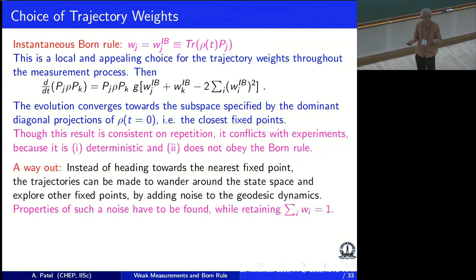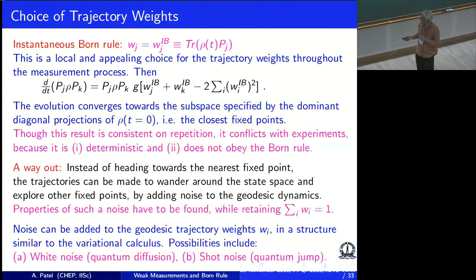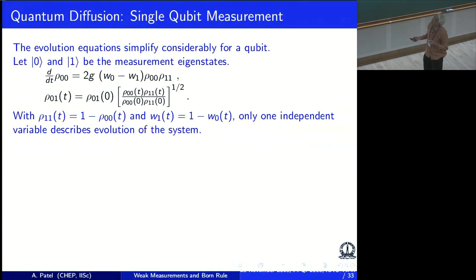There are two popular instances of noise. One of them is called white noise, which is used in diffusion processes — Brownian motion or Langevin equation. Another popular situation is what is called shot noise, which corresponds to a quantum jump: either the process happens or it doesn't, like zero or one. I'm going to add noise to these weights and see what happens. To show the algebra explicitly, it is convenient to simplify to the case of just one qubit.